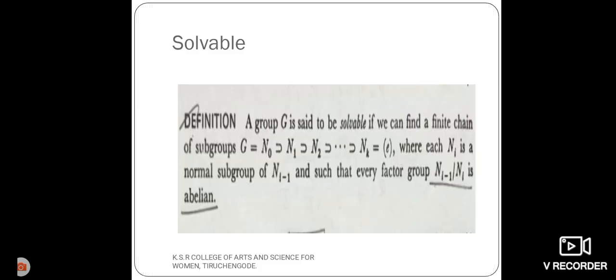In this video, we discuss solvability. A group G is said to be solvable if we can find a finite chain of subgroups. It means G is equal to N₀ contained in N₁ contained... etc., Nₖ which is equal to singleton set {e}, where each Nᵢ is the normal subgroup of Nᵢ₋₁ and such that every factor group Nᵢ₋₁/Nᵢ is abelian.